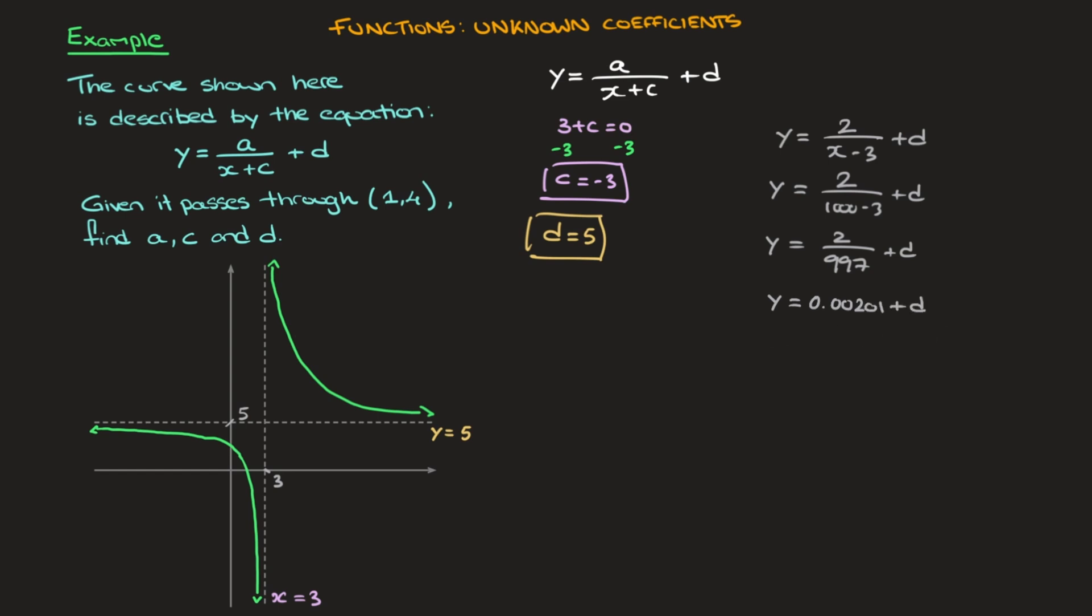And what we see here is that when x equals a thousand, y is equal to something really small plus d. And we know just by looking at our graph, that when x equals a thousand, this curve will be a tiny bit above y equals 5. And this 0.00201 is that tiny bit above 5.